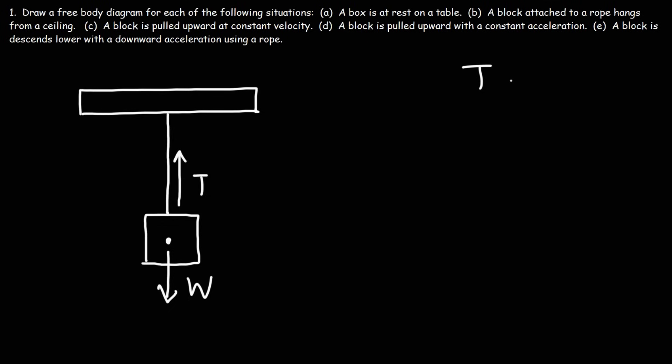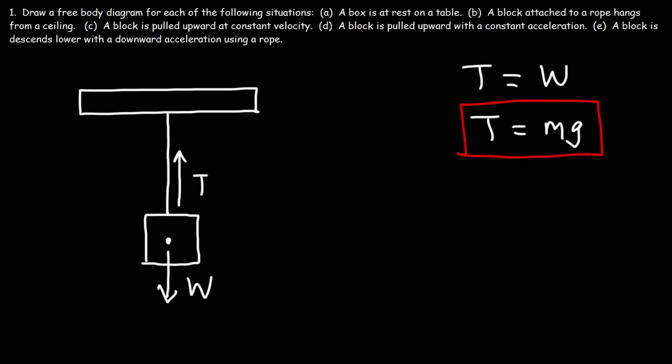The tension is equal to the weight force, and the weight force is mg. So the tension in the rope is simply mg. Tension is always the force that acts through a rope.